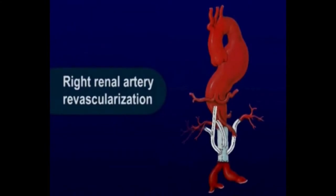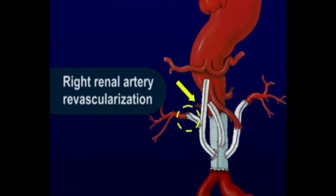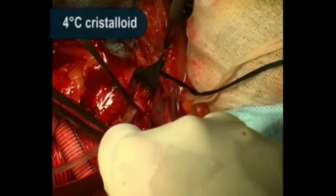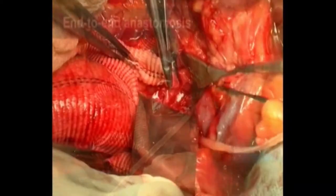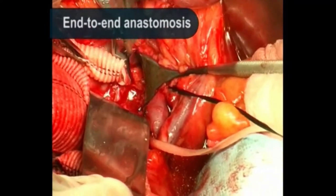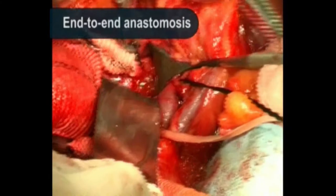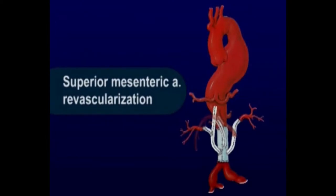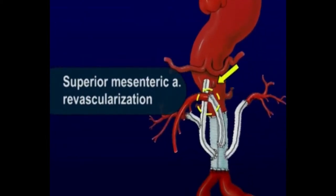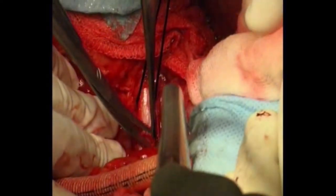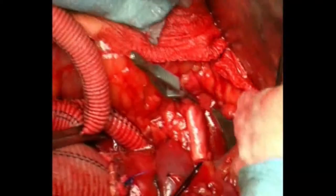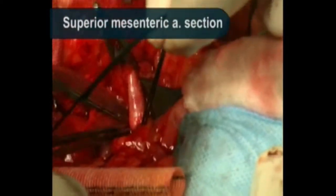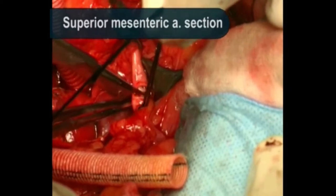Using the same procedure, the right kidney is detached from the aorta and re-anastomosed to a side branch of the graft. About three centimeters of the SMA from its origin are isolated and mobilized. The artery is then cut close to the aorta and re-attached to the graft. The risk of mesenteric ischemia during this step is usually very low, thanks to a well-developed collateral network.